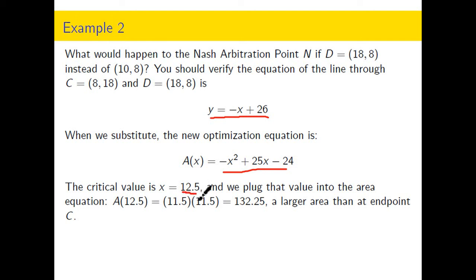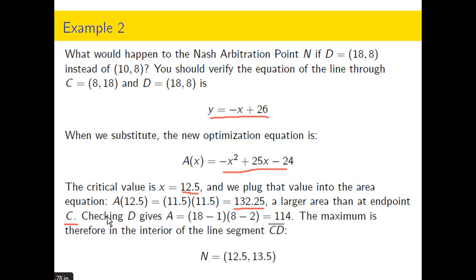When we plug that in, we're going to get a maximum area of 132 and a quarter, which was larger than the endpoint C example. So taking that, knowing that the maximum area occurred there, that's how we find the X value of the Nash point. And then we plug it into the line segment equation to figure out what the Y coordinate is. And that is the new Nash arbitration point if we switch to a new point for D.